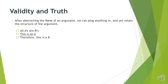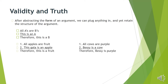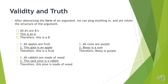We don't care about whether the premises are true — we're asking: if the premises are true, what does it tell us about the conclusion? Consider: 'All apples are fruit; this gala is an apple; therefore this is a fruit.' Same structure: 'All cows are purple; Bessie is a cow; therefore Bessie is purple.' Even if all cows are not purple, the argument has the same structure. And: 'All rabbits are made of wood; this jack pine is a rabbit; therefore this pine is made of wood.'